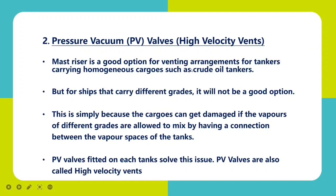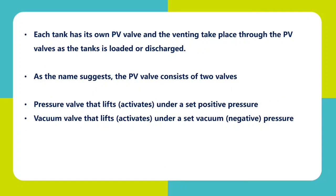The mast riser is a good option for venting on tankers carrying homogeneous cargo, such as crude oil tankers. But for ships carrying different grades, it will not be a good option, because cargo can get damaged if the vapors of different grades are allowed to mix while having a connection between the vapor spaces of tanks. PV valves fitted on each tank solve this issue. PV valves are also called high velocity vents. Each tank has its own PV valve, and venting takes place through the PV valve as the tank is loaded or discharged. The PV valve consists of two valves: first is the pressure valve, and second is the vacuum valve.